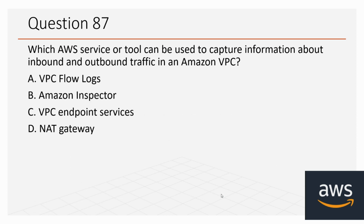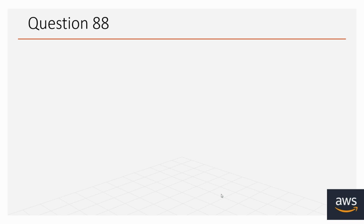Question number 87: Which AWS service or tool can be used to capture information about inbound and outbound traffic in an Amazon VPC? Options: A. VPC Flow Logs, B. Amazon Inspector, C. VPC Endpoint Services, D. NAT Gateway. The correct option is A, VPC Flow Logs. VPC Flow Logs is used to capture information about inbound and outbound traffic in an Amazon VPC.